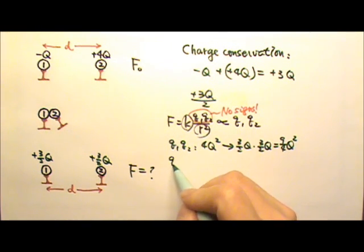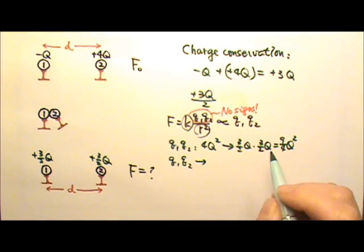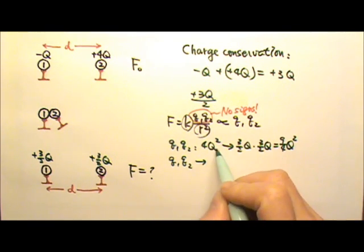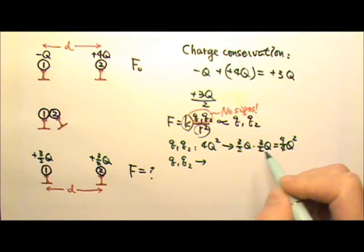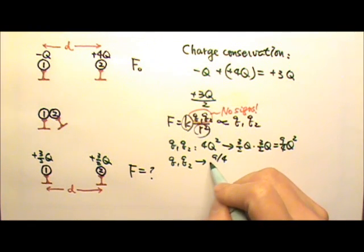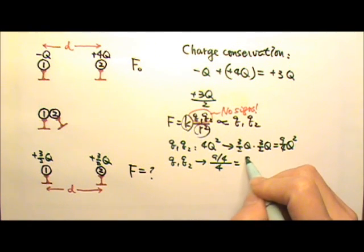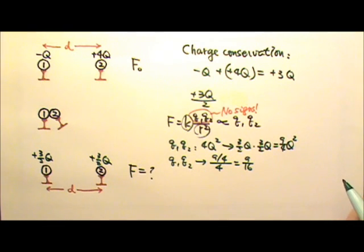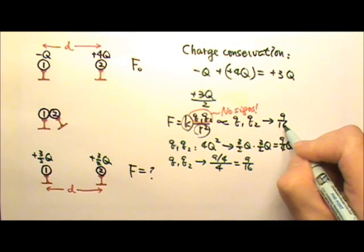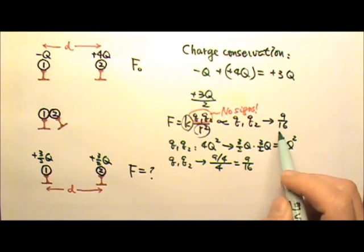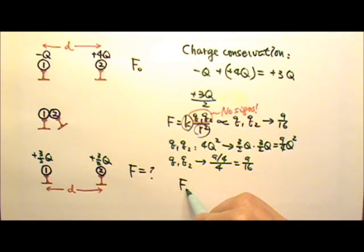So the factor by which q1 times q2 changes is the new value divided by the old value. The q squared cancel, so I can just do 9 fourths divided by 4, which is 9 divided by 16. So the q1 times q2 changes by a factor of 9 sixteenths. That means the force changes by the same factor. The force used to be F0, and the new value is the old value times the factor by which it changes. So that's the new force.